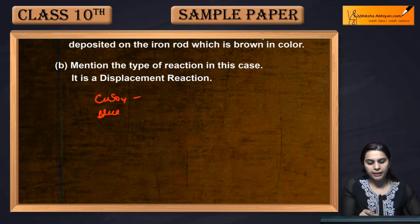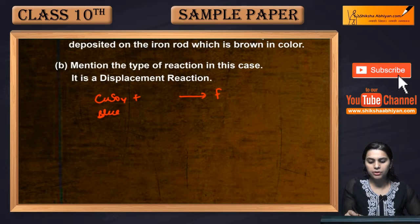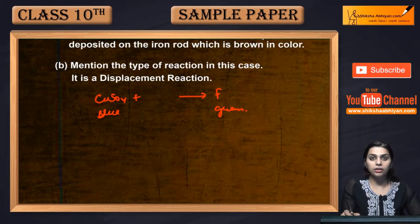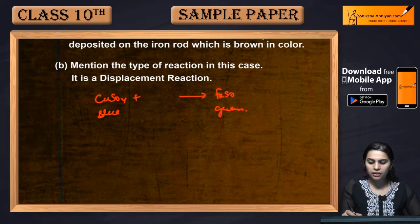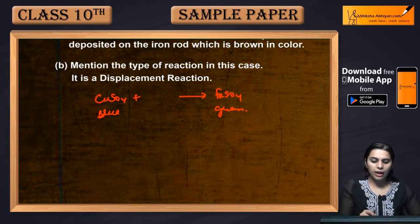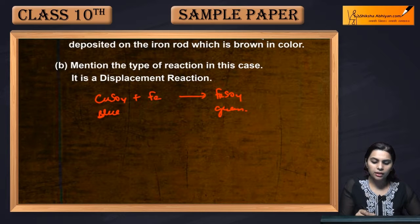We dipped a metallic rod in the solution. After that, the solution we obtained was green in color. And which solution is green? Ferrous sulphate. So which metallic rod was dipped here? Iron.